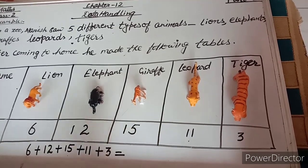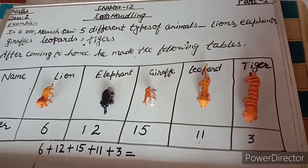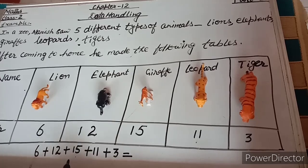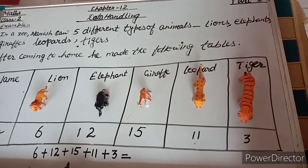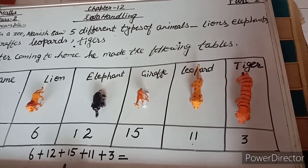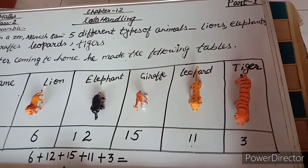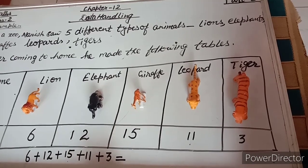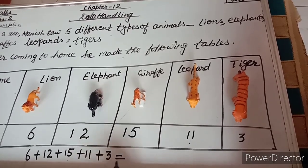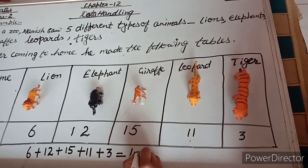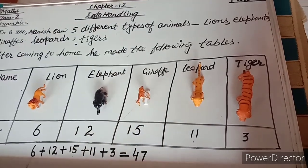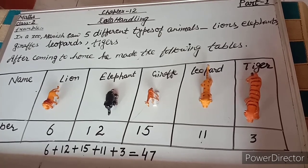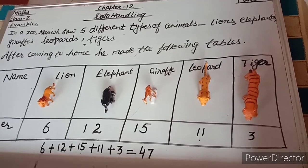Total animals counted: 6 plus 12 is 18, 18 plus 15 is 33, 33 plus 11 is 44, 44 plus 3 is 47. So total animals he saw is 47.